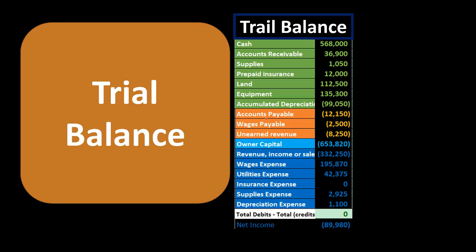Some trial balances may have account numbers, which will usually be in sequential order — asset account numbers might all start with one, liability accounts with twos, and so on. However, the primary ordering of accounts is by type. So if you assigned an account number of one to accounts payable, accounting software would still group it with liabilities rather than at the top. When constructing account numbers, they must fit the order of account types, and within each type, accounts are generally ordered by account number — which helps avoid default alphabetical ordering.